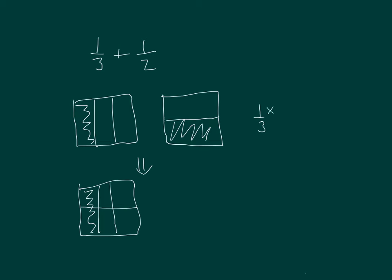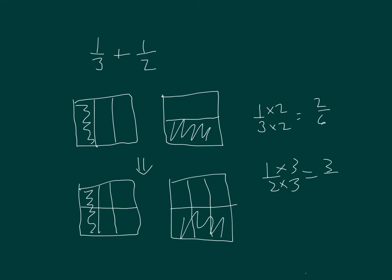One third times two and times two to get to two sixths, and then for one half, I have one half times three and times three to get to three sixths.